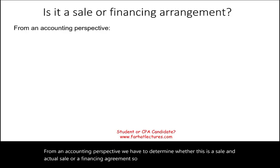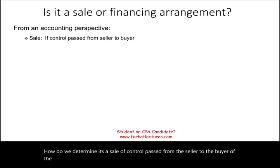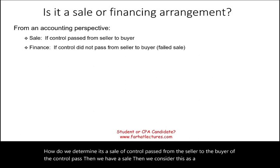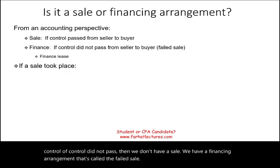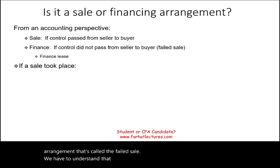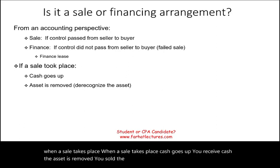From an accounting standpoint, how do we determine it's a sale? If control passed from the seller to the buyer, then we have a sale — we consider this as a sale. If control did not pass, then we don't have a sale; we have a financing arrangement — it's called a failed sale. If a sale took place, cash goes up, the asset is removed, and you de-recognize the asset along with accumulated depreciation.